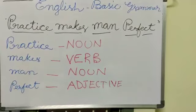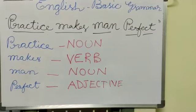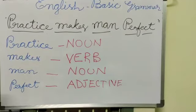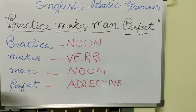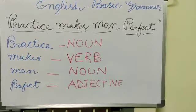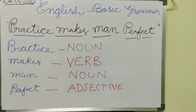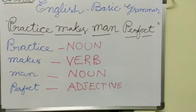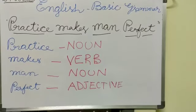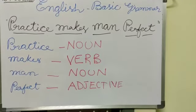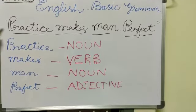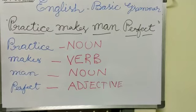Nouns are of different kinds. There are four types of nouns: common noun, proper noun, collective noun, and abstract noun. 'Practice' comes under one of these categories — it represents doing something a number of times.